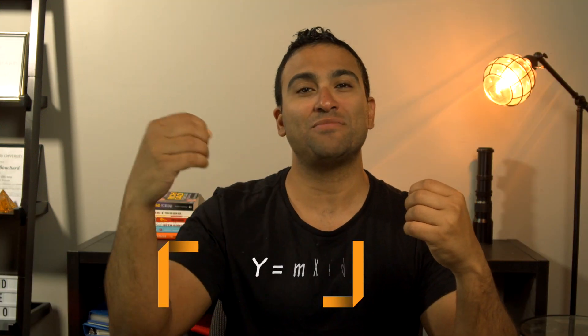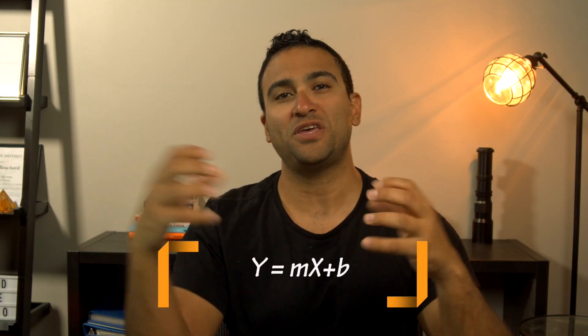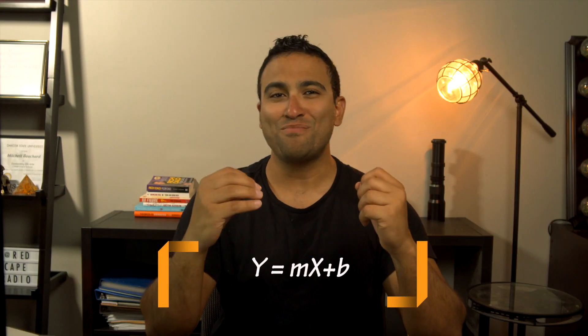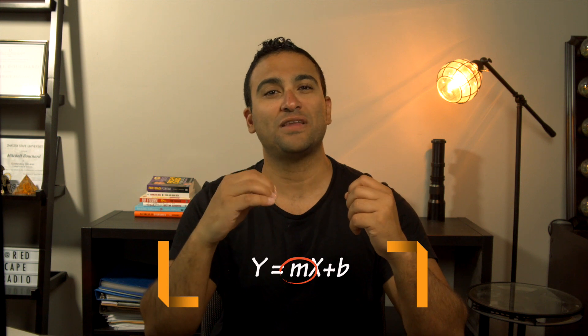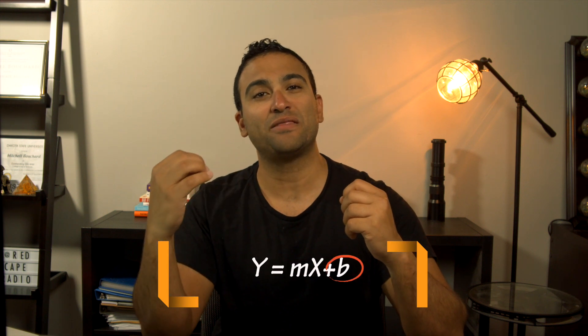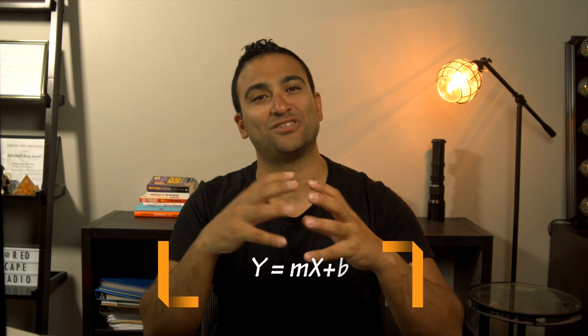If you recall from basic mathematics, a straight line can be represented using this equation: y equals m times x plus b, where m represents the slope of the line and b represents the y-intercept.